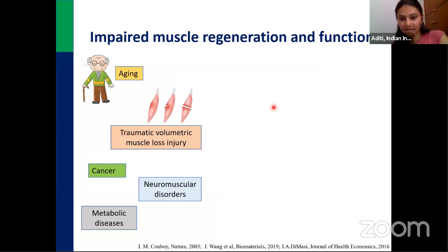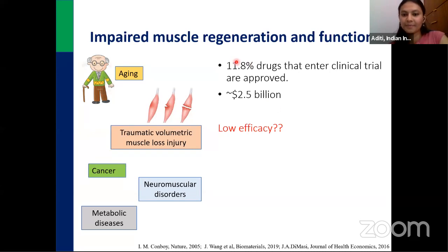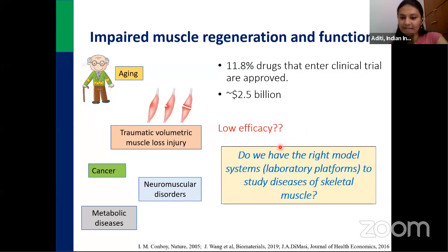Skeletal muscle has a beautiful regeneration process — it has a pool of stem cells which can differentiate on demand when there's injury, becoming specialized cells called myoblasts. These myoblasts fuse to form myotubes, which bundle together to form myo-bundles. However, with age, large volumetric loss, cancer, and various disorders, this regeneration capacity can be compromised or dysfunctional. Many drugs have been tested to heal muscle, but there is a big discrepancy — only 12% of drugs that go for clinical trials get approved, leading to a loss of nearly $2.5 billion.